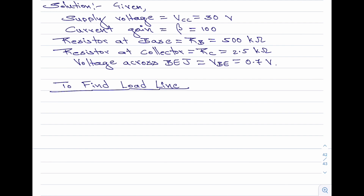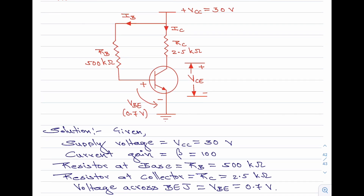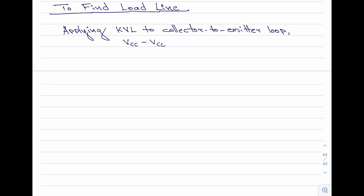Coming back to this video, to find the load line we will apply KVL to the collector-to-emitter loop and separately evaluate the equation for IC equal to 0 and VCE equal to 0. That will give us the points on the x and y axis where the load line meets the output characteristic curve. Applying KVL to the collector-to-emitter loop, the equation is: VCC minus VCE minus IC·RC equals 0. Let me call this equation 1.